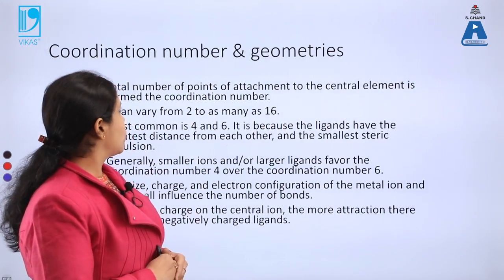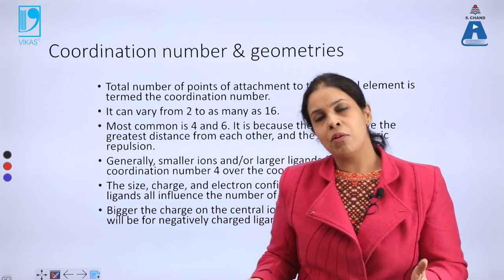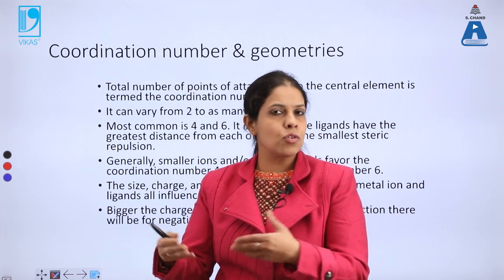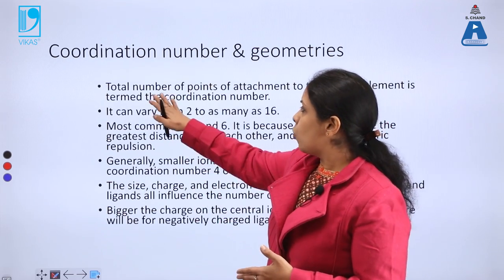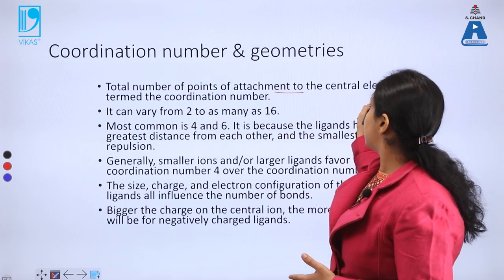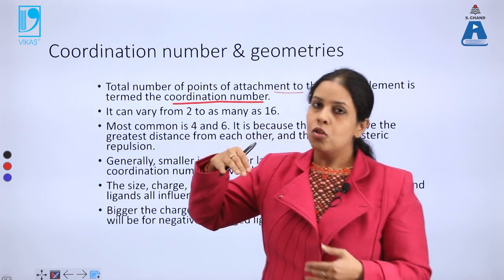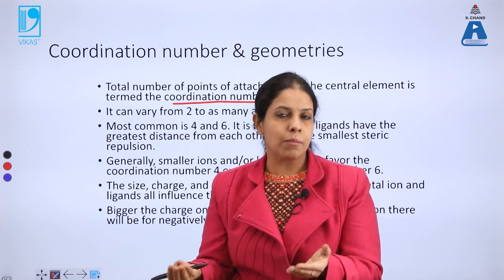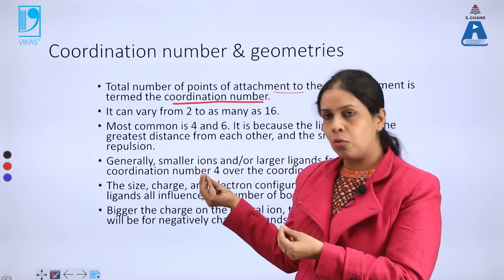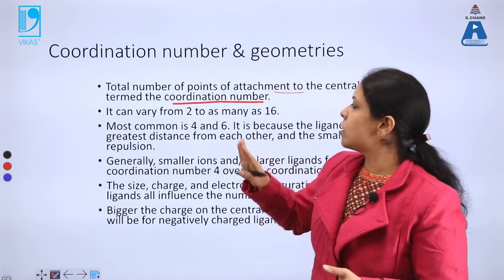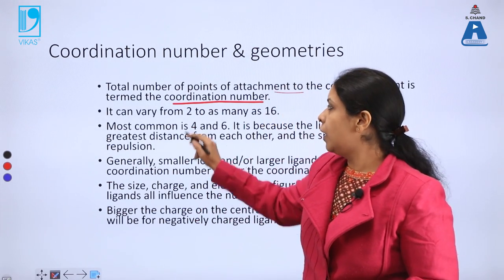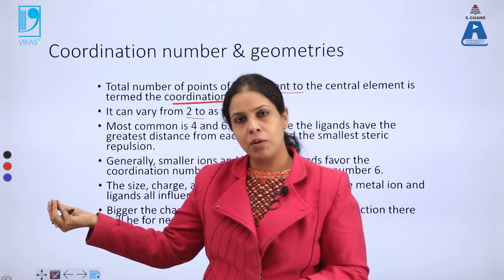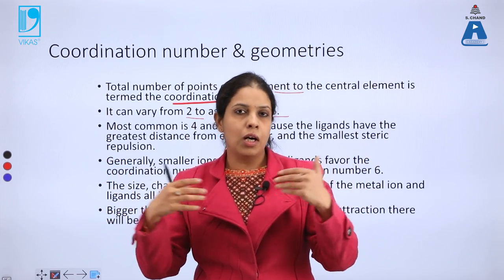Our second topic is coordination number and different geometries. We all have different numbers of friends with whom we share our secrets — some of us have two friends, some have three, and so on. Similarly with compounds, the total number of points of attachment to the central element is termed as coordination number. Those friends we are attached with, we are coordinated with them.